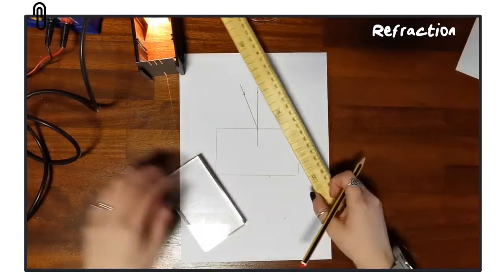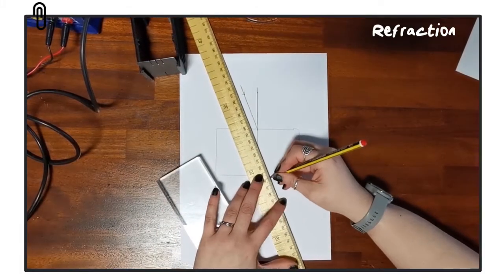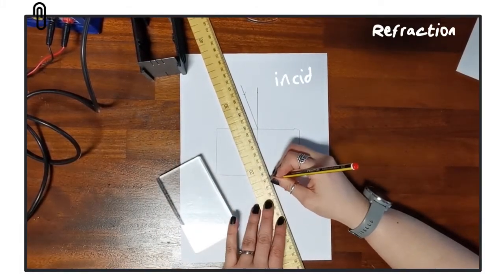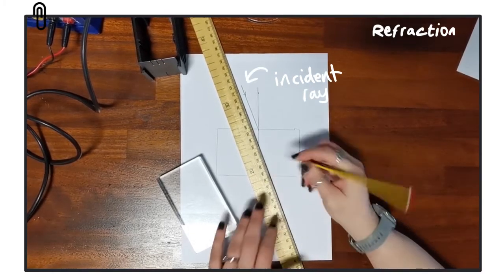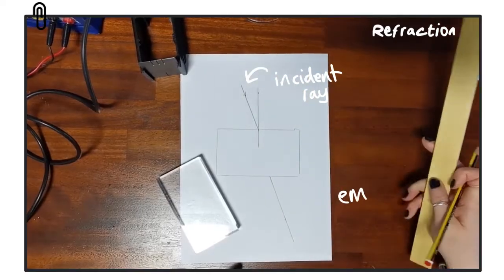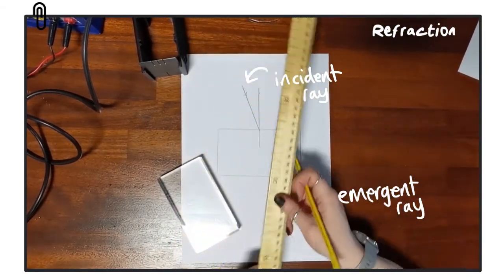Once we've worked out where the emergent ray is, we can remove the block, use the ruler then to join up those points, and that will show us where the light emerged from the block. And by joining the two rays that we have in the middle, that will tell us where the ray of light went while it was inside the block.